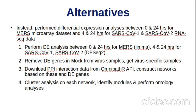We then downloaded PPI interaction data from the OmniPath API and constructed networks based on these differentially expressed genes. We then performed module cluster analysis on each network to identify communities of genes, and then ran gene ontology analyses on these.